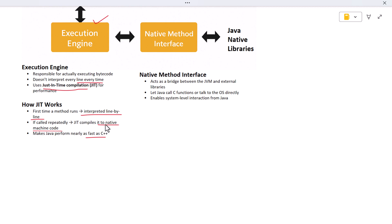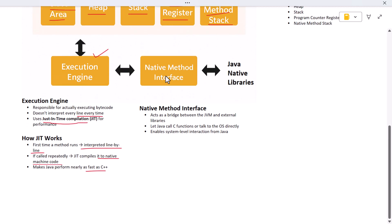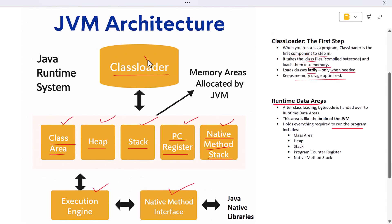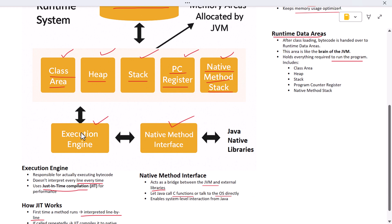Now let's talk about another piece: the native method interface. This component acts like a bridge between the JVM and external libraries or native applications. If your Java code needs to call a C function or talk to your operating system directly, this is where the communication happens. So putting it all together: the class loader loads your class, the runtime data area stores the instructions, objects, variables, and metadata, the execution engine runs your bytecode efficiently, and the native method interface helps Java interact with code outside the JVM.